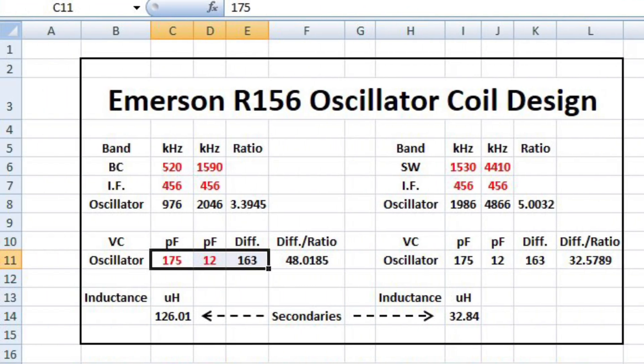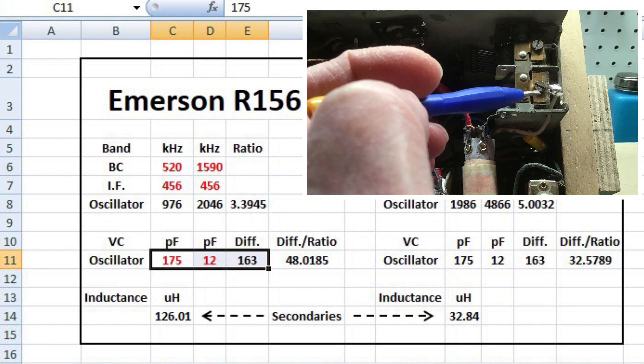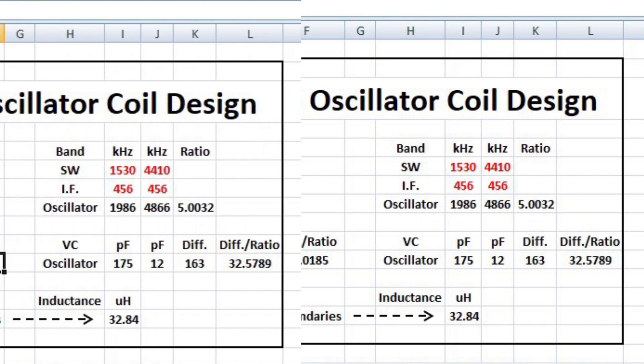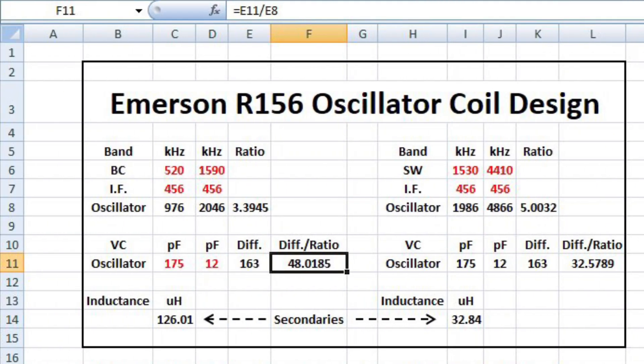I measured the oscillator section of the variable capacitor with the trimmer screw backed all the way out. The trimmer on this capacitor is 20 picofarads. So 175 minus 12 equals 163. And then you can see we have a difference ratio — that being the 163 divided by 3.3945, giving us the difference ratio of 48.0185.